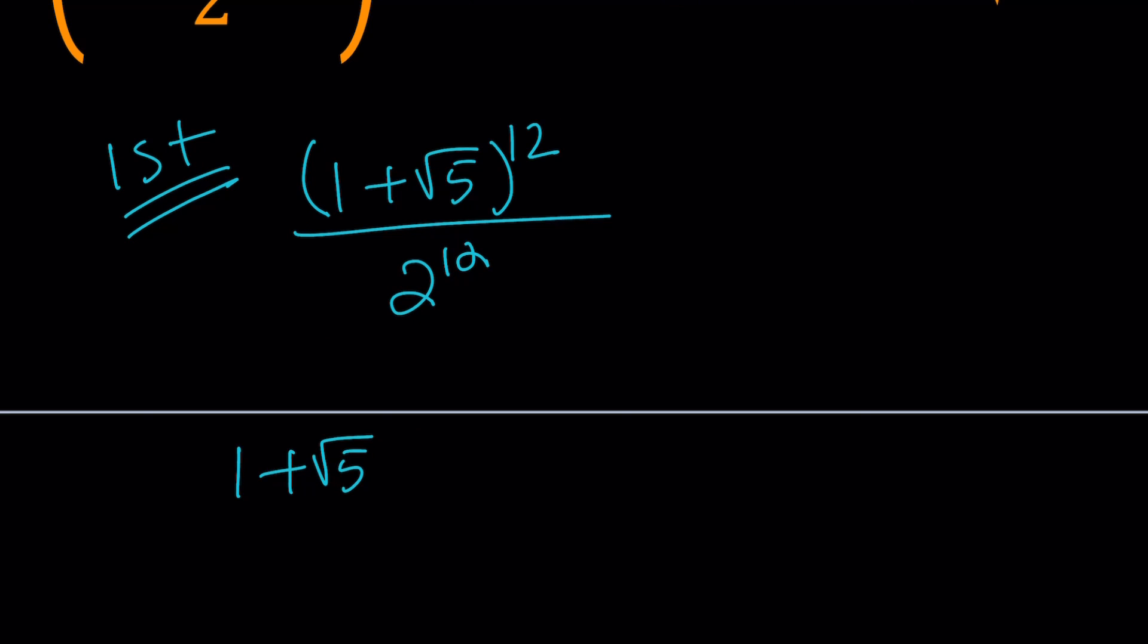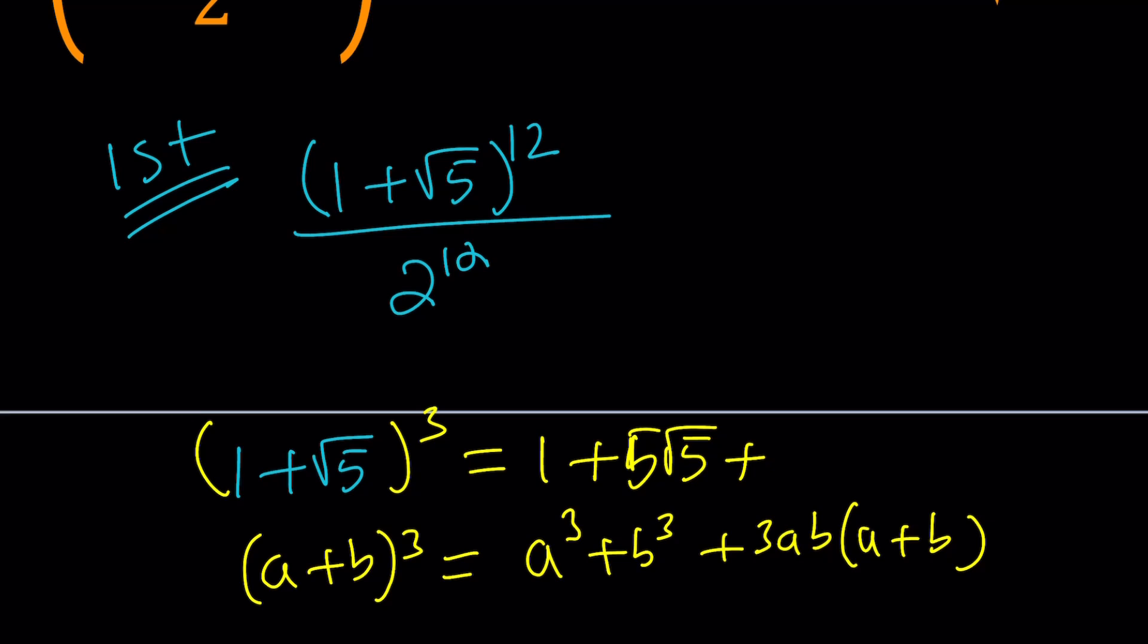I'm going to start by cubing. And for cubing, I'm going to use a special formula. Remember, a plus b cubed can be written in different ways. And my favorite method is a cubed plus b cubed plus 3ab times a plus b, which is something that I use for cubic formula. This is going to be 1 cubed. 5 root 5 is going to be root 5 cubed. Plus 3ab is going to be 3 root 5. And that's going to be multiplied by 1 plus root 5.